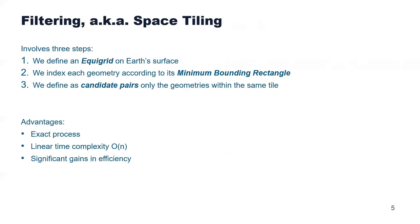In more detail, filtering consists of three steps. The first is to define an equigrid on the surface of the Earth. Next, we add every geometry to this index by considering its minimum bounding rectangle. Finally, we retrieve the set of candidate pairs from geometries that co-occur at least once in this equigrid index. This is an exact process that does not miss any qualifying pairs, and its complexity is linear, yet it manages to reduce the computational cost significantly.